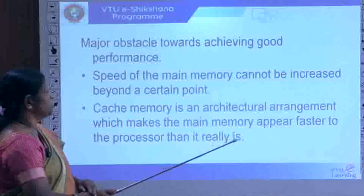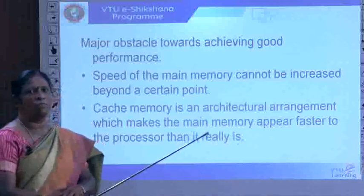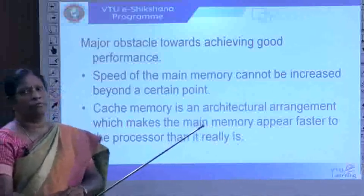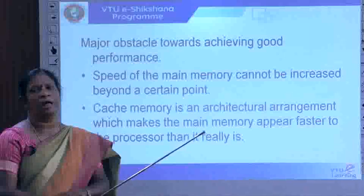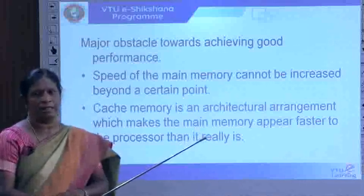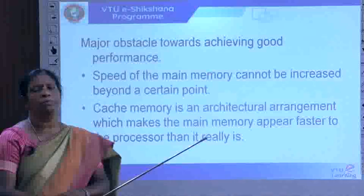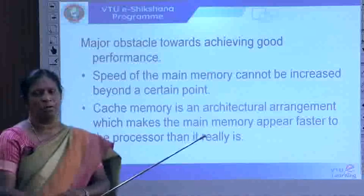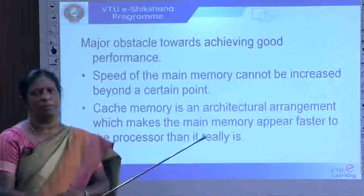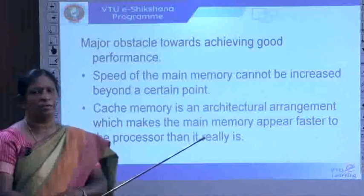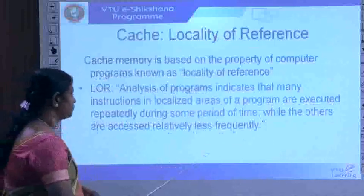The cache is an architectural arrangement that makes main memory appear faster to the processor than it really is. Frequently used data and instructions are kept in the cache so they can be provided to the processor quickly, increasing system performance. The speed of main memory cannot be increased beyond a certain point, so cache memory resolves this limitation.